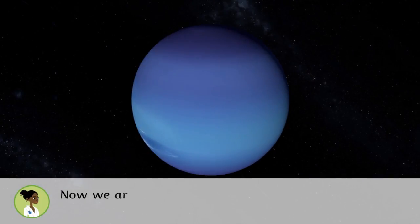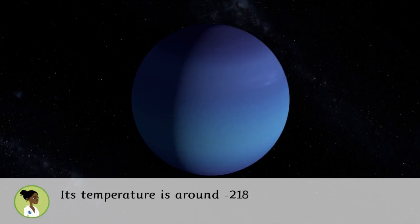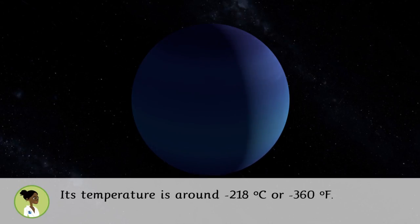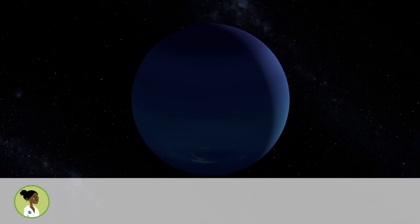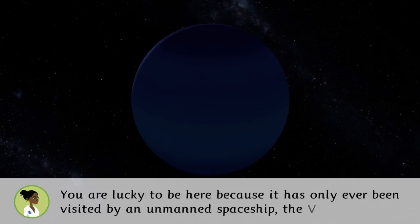Now we are on Neptune, the ice giant. Its temperature is around 218 degrees Celsius below zero or 360 degrees Fahrenheit below zero. You are lucky to be here because it has only been visited by an unmanned spaceship, the Voyager 2.